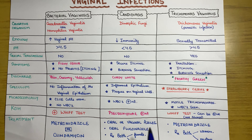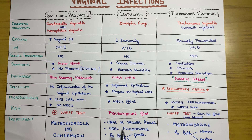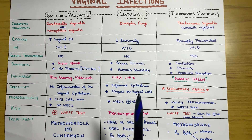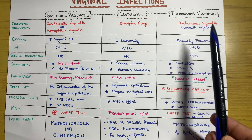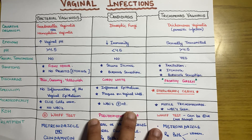Treatment for candidiasis is mainly oral or vaginal azoles — a drug group very helpful against fungal infections. We can use oral fluconazole. In some cases, both the female patient and her partner need to be treated.